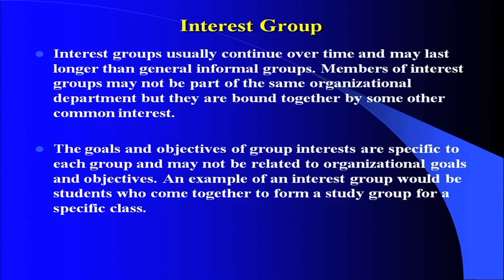The goal and objective of interest groups are specific to each group and may not be related to organizational goals. An example of an interest group would be students who come together to form a study group for a specific class. Like-minded people with common interest come together and form a group. When they discuss together, they can definitely perform better. Working in a group helps, provided there is a common interest.